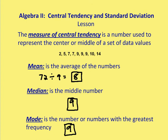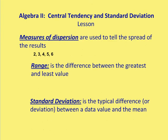Now let's talk about measures of dispersion, which describe the spread of results. There are two ways to measure dispersion: range and standard deviation. Range is simply the difference between the greatest and least value. For the set 2, 3, 4, 5, and 6, the range is 6 minus 2, which equals 4.